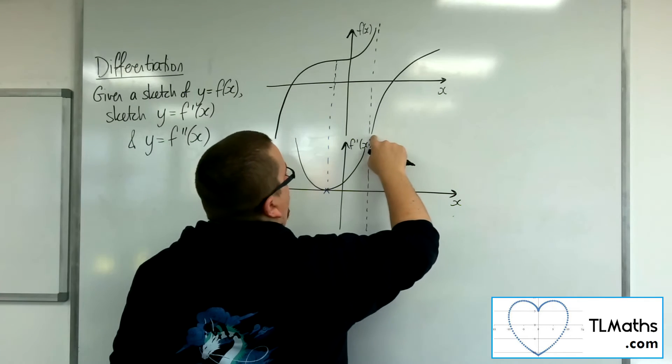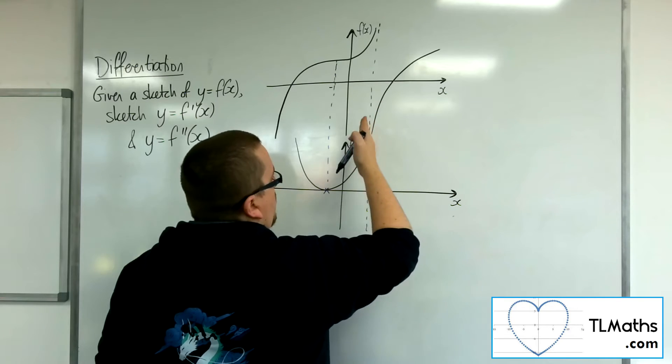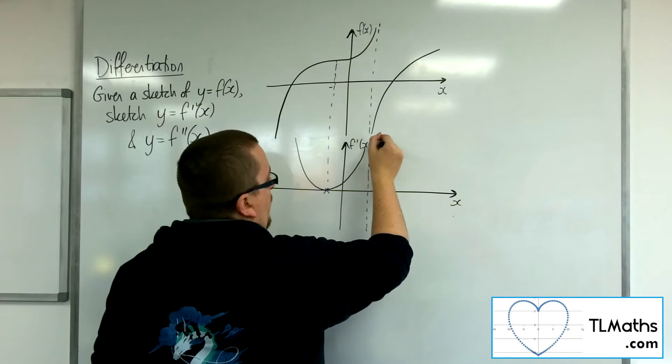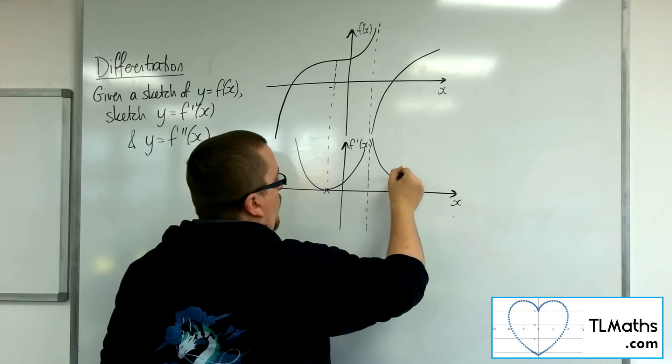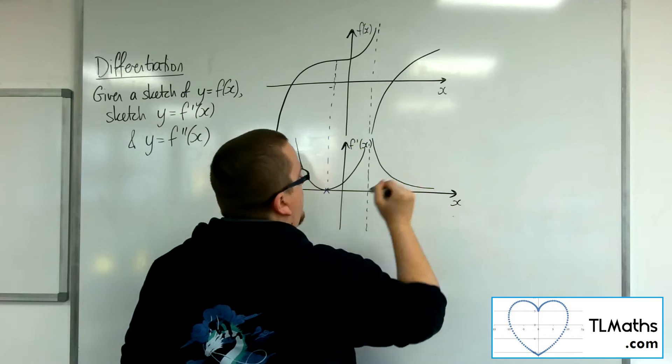But it's starting off very steep, because it's right down next to that asymptote. So it's going to start off very steep, and it's positive, so it's going to be up here. And then it's going to be slowing down.